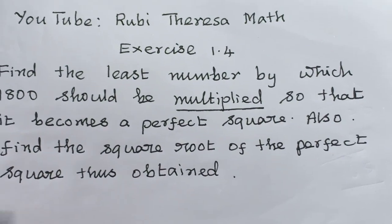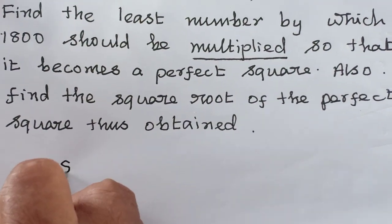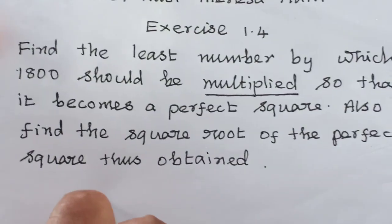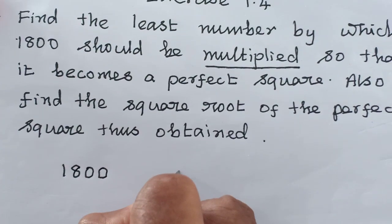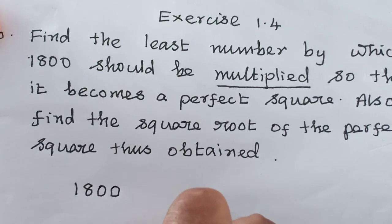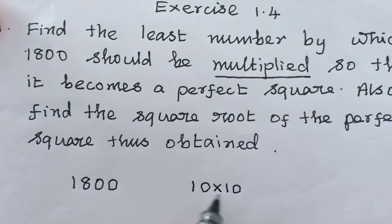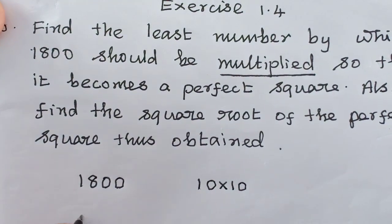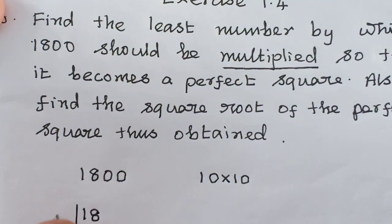So how you have to find out is 1800. Actually easy way is here there are two zeros. Two zeros means automatically what will you get? Very good. 10 into 10. If you are removing these two zeros, 10 into 10. So you can take only 18 alone. This is one way of doing. So 2.